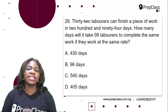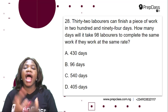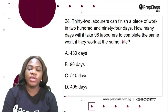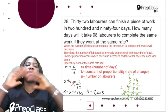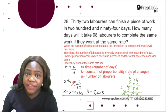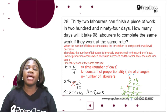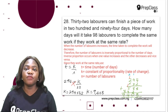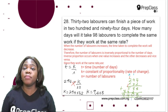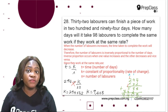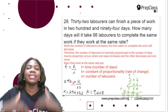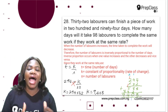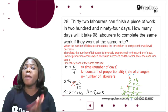Question 28: 32 laborers can finish a piece of work in 294 days. How many days will it take 98 laborers to complete the same work if they work at the same rate? When the number of laborers increases, the time taken to complete the work decreases. For example, if you share a plate of food among 3 people it takes about 10 minutes, but with 10 people it takes less time. So the number of laborers is inversely proportional to the number of days.